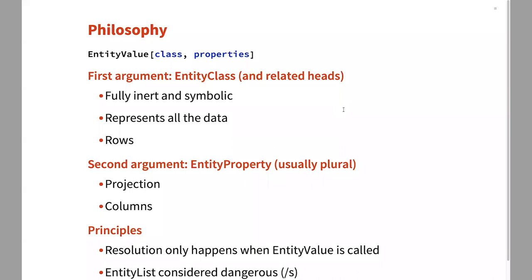Object-oriented programming languages have things called ORMs — object-relational models. We don't really have objects in the Wolfram language, or rather, they're not the most native way to think about this stuff. So when we started working on connecting to SQL, we already had a precedent for an entity-property framework.